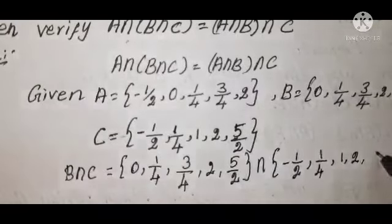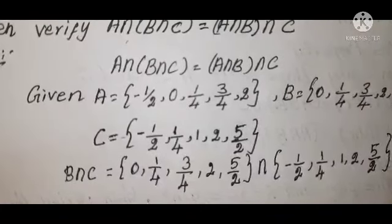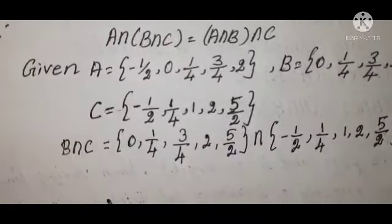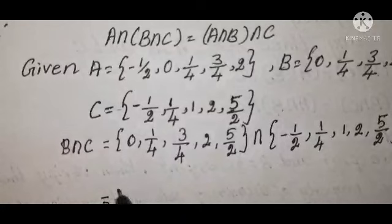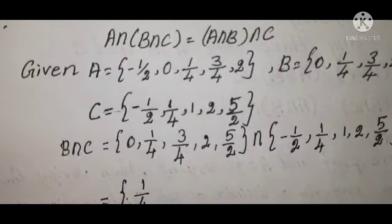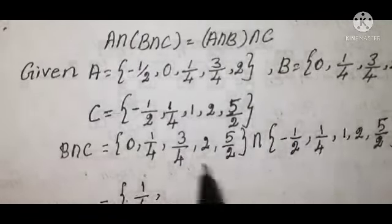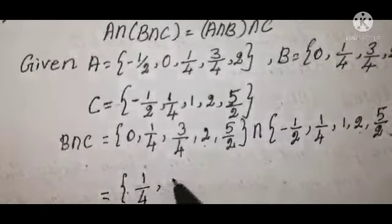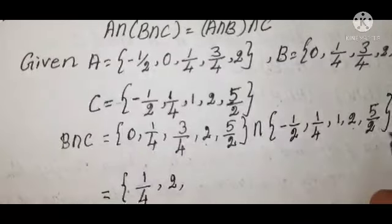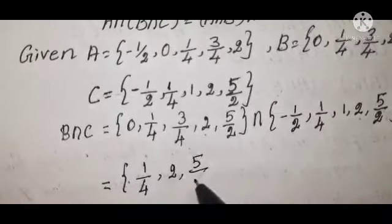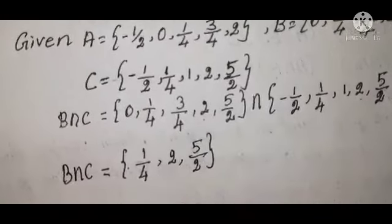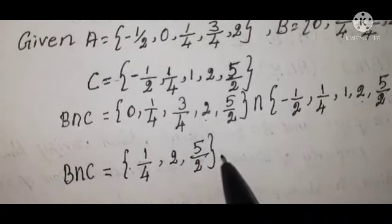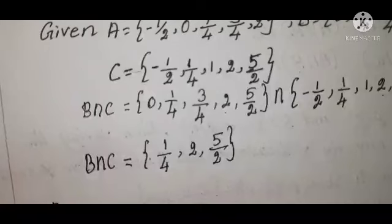Find B intersection C: B is {0, 1/4, 3/4, 2, 5/2} and C is {-1/2, 1/4, 1, 2, 5/2}. The common values are 1/4, 2, and 5/2. Therefore B intersection C equals {1/4, 2, 5/2}.